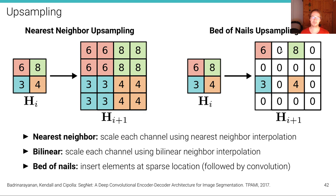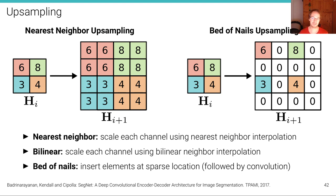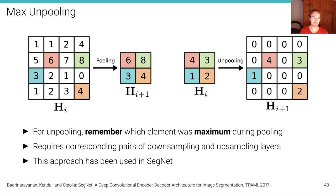The bed-of-nails approach is followed by a convolutional layer to fill in the missing components, which works quite well. The type of upsampling you want to use depends on the application, as different types produce different artifacts. For instance, bilinear upsampling often produces overly smooth results, while bed-of-nails upsampling can leave nail-like artifacts visible in the output — some values stick out while others are zero.